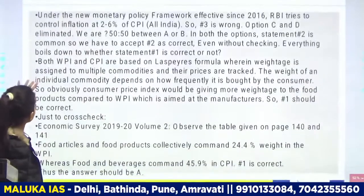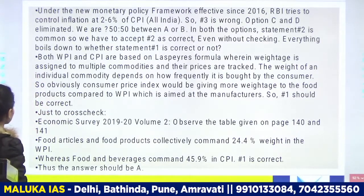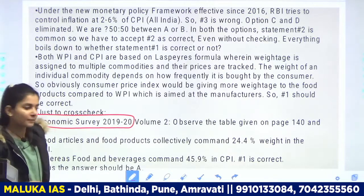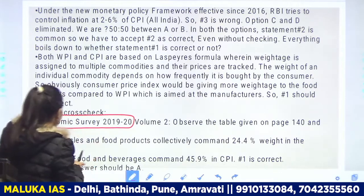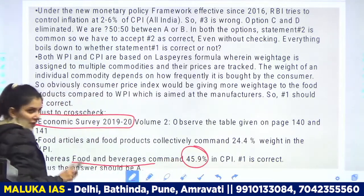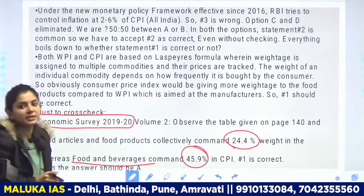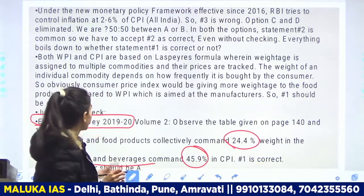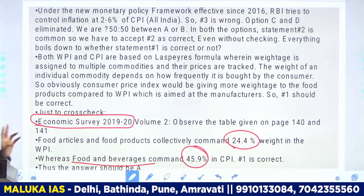Yahan par aapko iska explanation di gayi hai. Yeh sab economic survey se hai. Food and beverages ka CPI mein percentage hota hai 45.9%, jabki WPI mein yeh sirf 24.4% hota hai. So zyada CPI ke under hota hai. Baaki jo hai aap padh sakte ho — aap screenshot le lijiye.